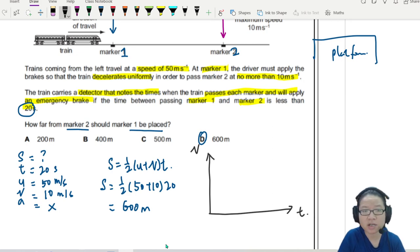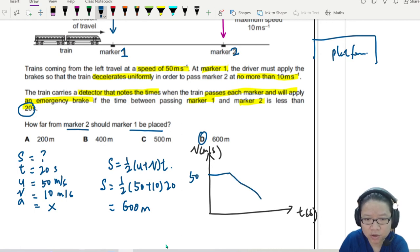So let's say this is my VT graph. The train in meters per second and seconds here. The train was traveling at 50, and then it would decelerate until it is 10. So marker one is where it starts to decelerate. Marker two is where it should be 10 meters per second. So you are given the time interval between these two. If it exceeds 20 seconds, then we emergency brake.